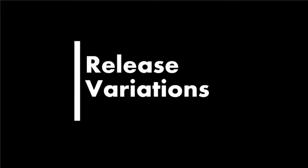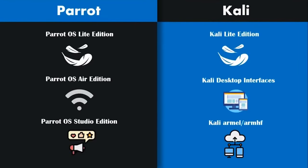The next thing we are going to compare is release variations. Both operating systems come with a variety of variations, but Parrot OS has much more diversity. Aside from the full editions provided by both Parrot and Kali, they also both provide light editions — basically the same thing where minimalistic tools are pre-installed and you can install and customize the operating system according to your own needs, or use it as a very lightweight and portable operating system.